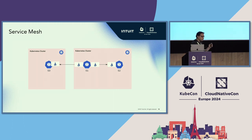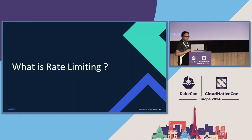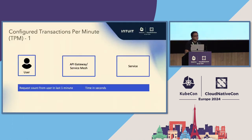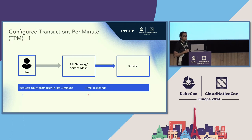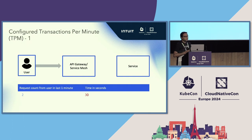Let's look at rate limiting. Rate limiting means how many transactions are allowed to be served for your service. For example, a service backed by API Gateway or service mesh allows only one transaction per minute. At the beginning of the minute you get your first request — it is within the limit so it gets forwarded to the backend service. A second request at the 30th second would be rejected because it crosses the threshold. That's rate limiting at a high level.